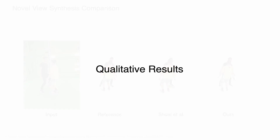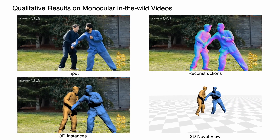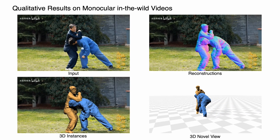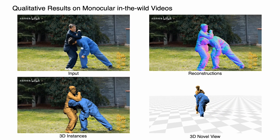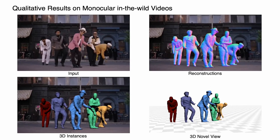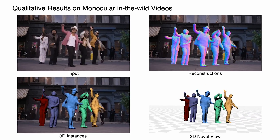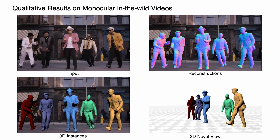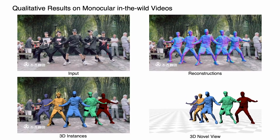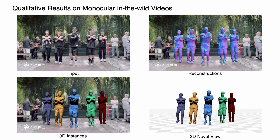Here we show more qualitative results of our method on in-the-wild monocular videos. Our method is able to recover complete and detailed 3D human reconstructions from monocular footage and generalizes to a crowd of people with diverse human shapes, garment styles, and complex body motions.